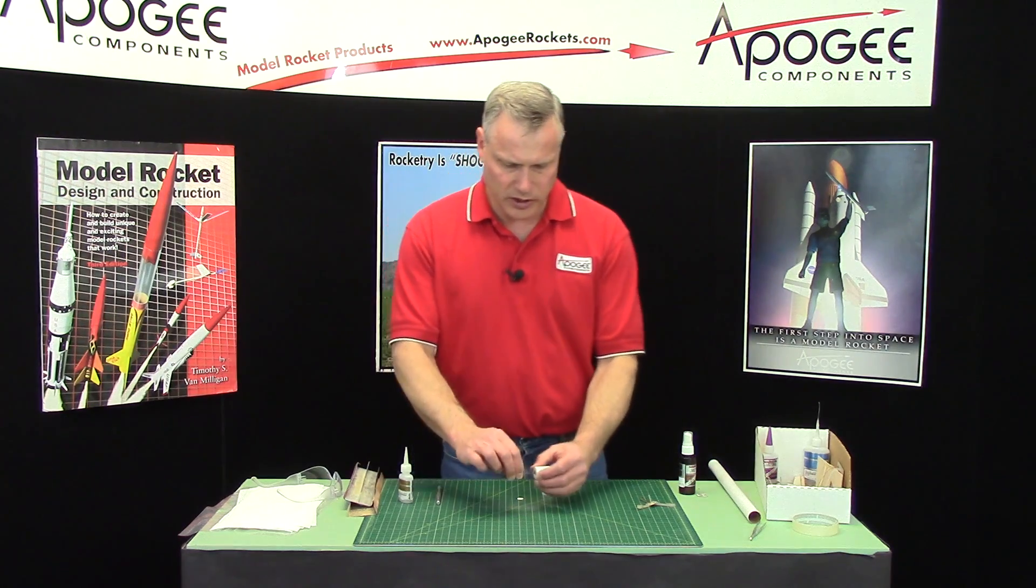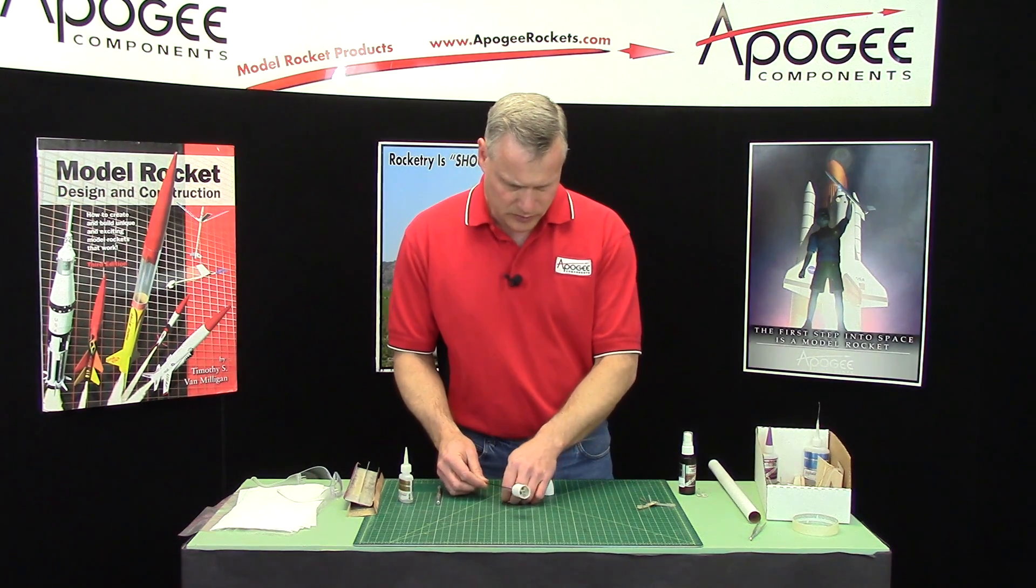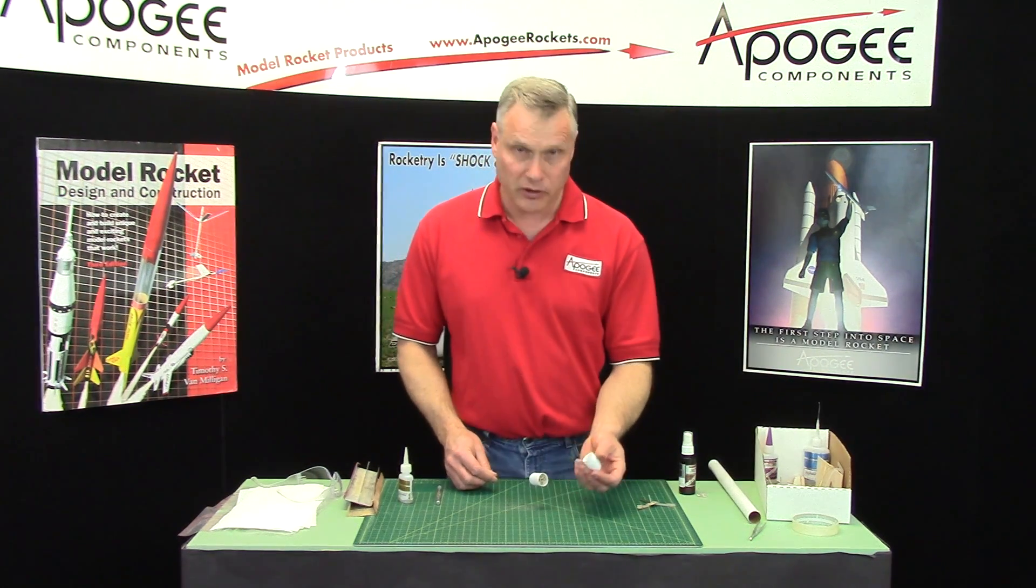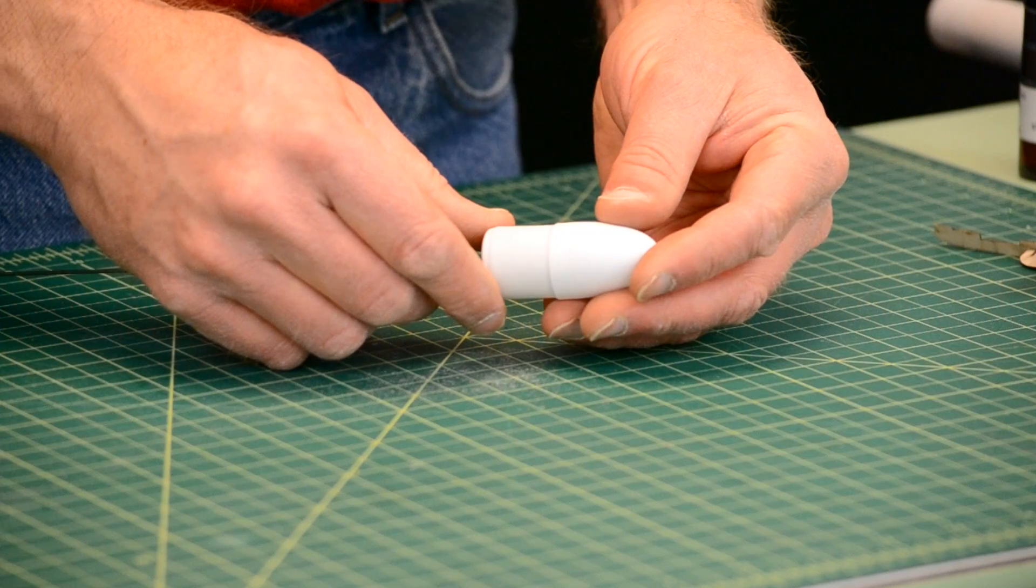Okay, so that's glued on there. That's now permanent. And now we're going to take our nose cone and we're going to glue that onto the shoulder.